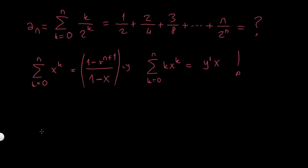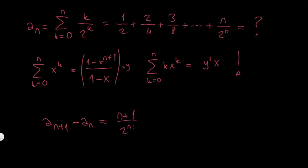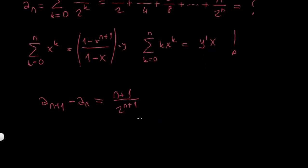Let's think of another solution. If I name the sequence a_n and consider a_{n+1} minus a_n, you can do this for any sum and you'll get only the a_{n+1} term — because you're adding n+1 terms and subtracting n terms — so you're left with just the last term, which is (n+1) over 2 to the n+1.